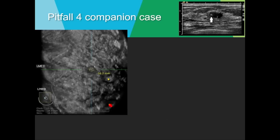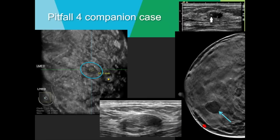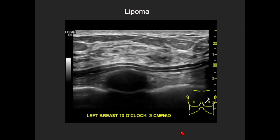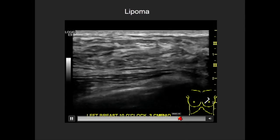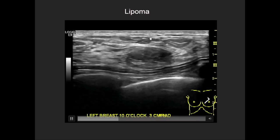Another companion case from ABUS: a mass on coronal reformat that on handheld appears parallel, circumscribed, and oval — isoechoic to fat, standing out because it's surrounded by more echogenic breast parenchyma. This time we did correlate with the mammogram. On tomosynthesis, a completely lucent mass was seen at the same location — consistent with a lipoma. The clip confirms all benign features; the key is it's really isoechoic to the pre-mammary fat.